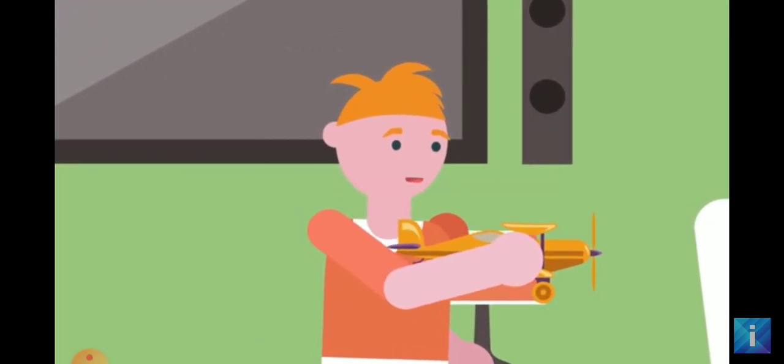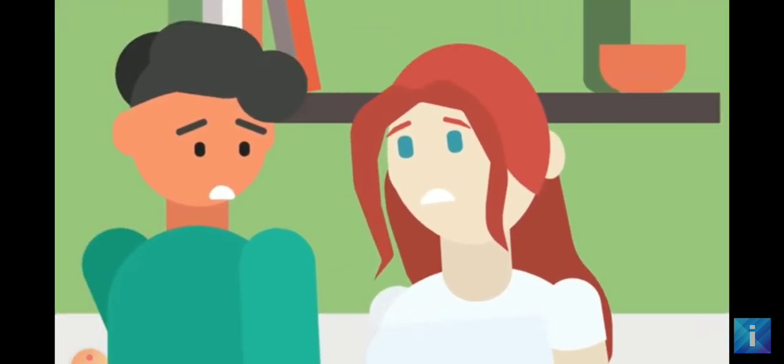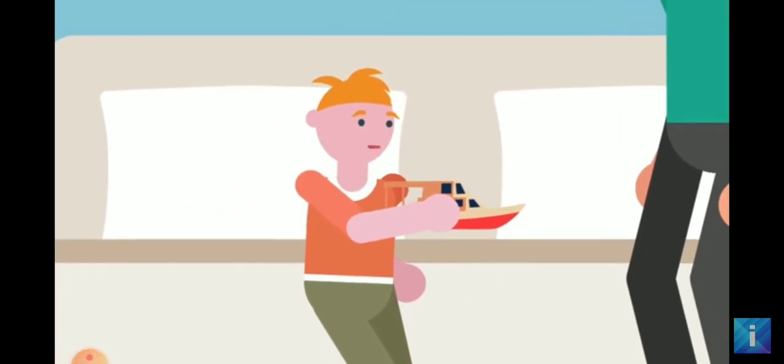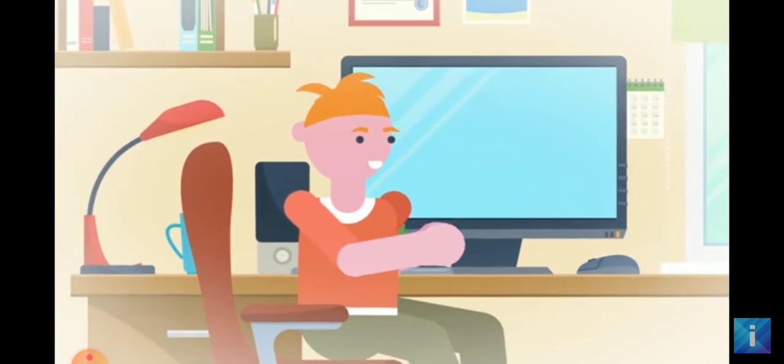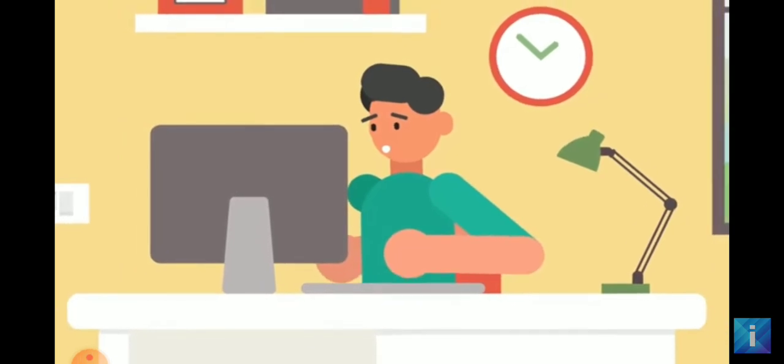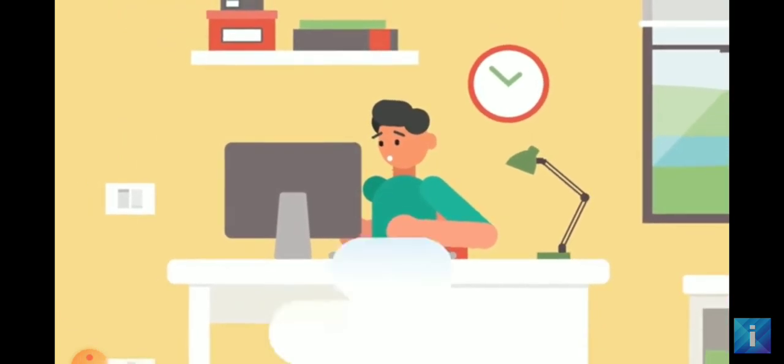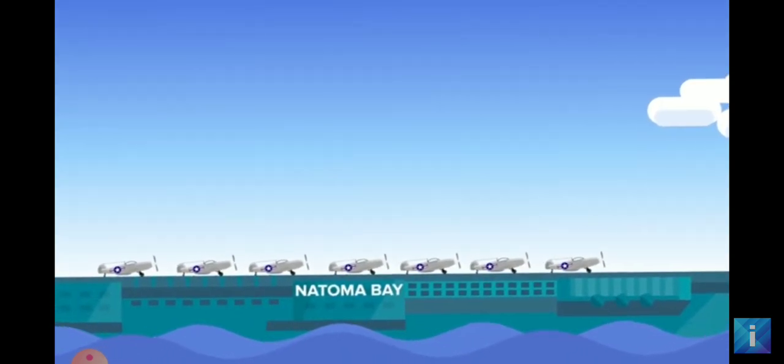After a few weeks of this, he started telling his parents that during the war, he'd flown a fighter plane called a Corsair. Six months short of his third birthday, he told them he'd flown his plane off a boat called the Natoma. Unless he was secretly using Google, he just couldn't have known that such a boat existed. His father went online and discovered that during the war, there was such a boat. It was the USS Natoma Bay, an escort carrier that sailed in the Pacific Ocean.